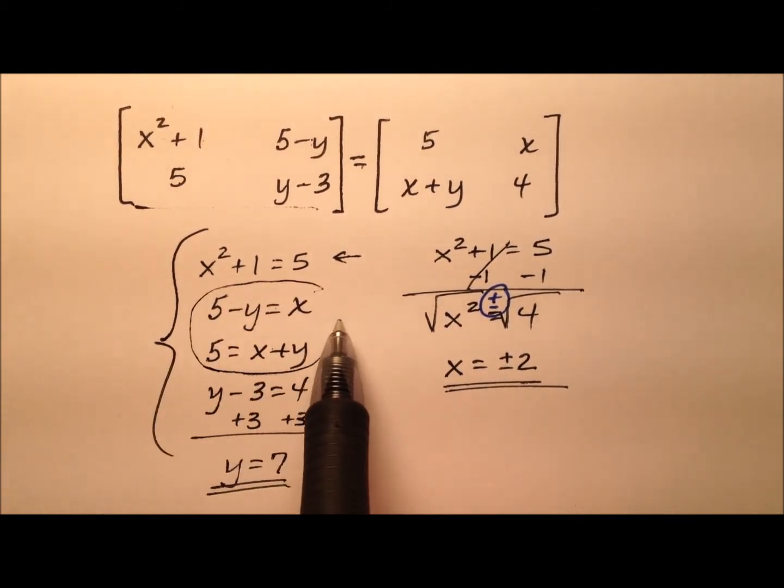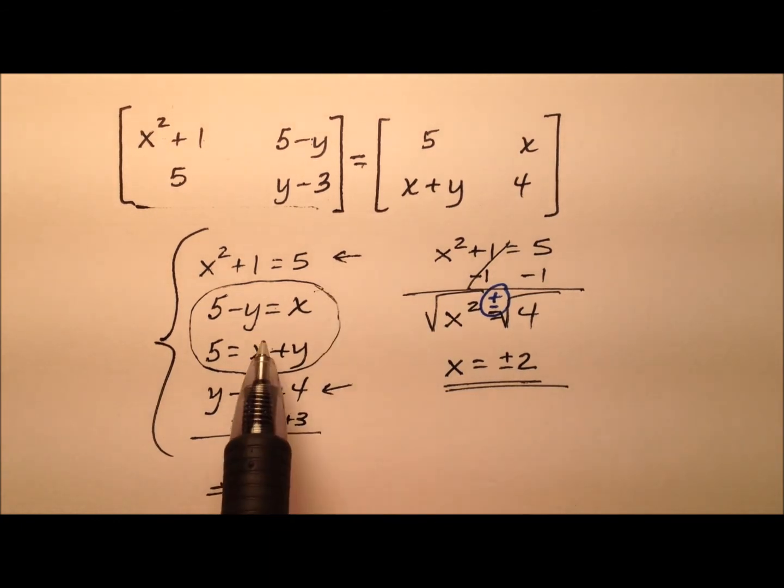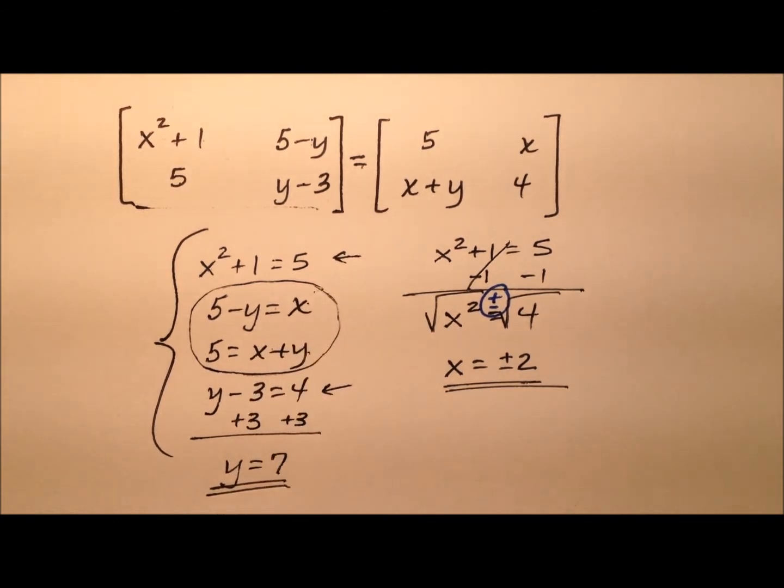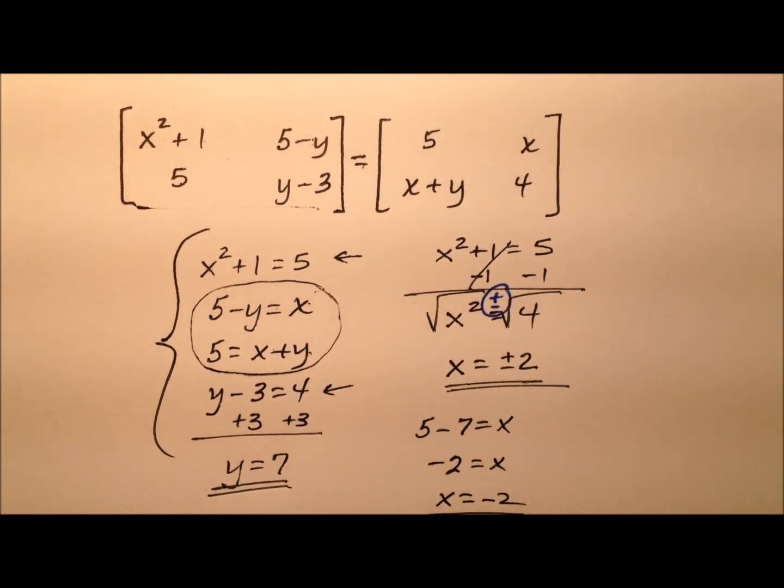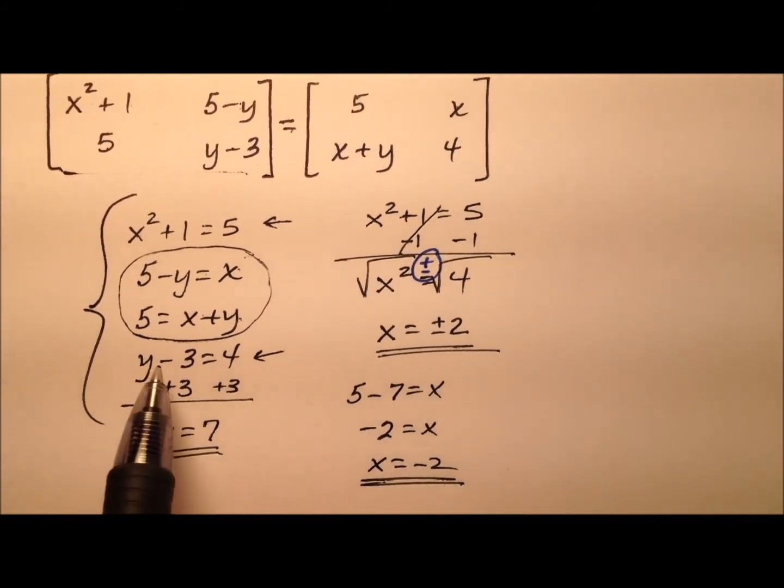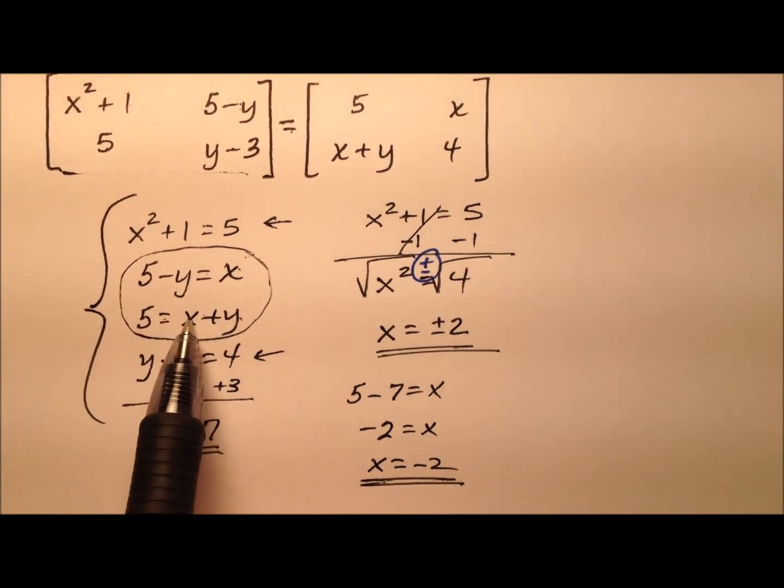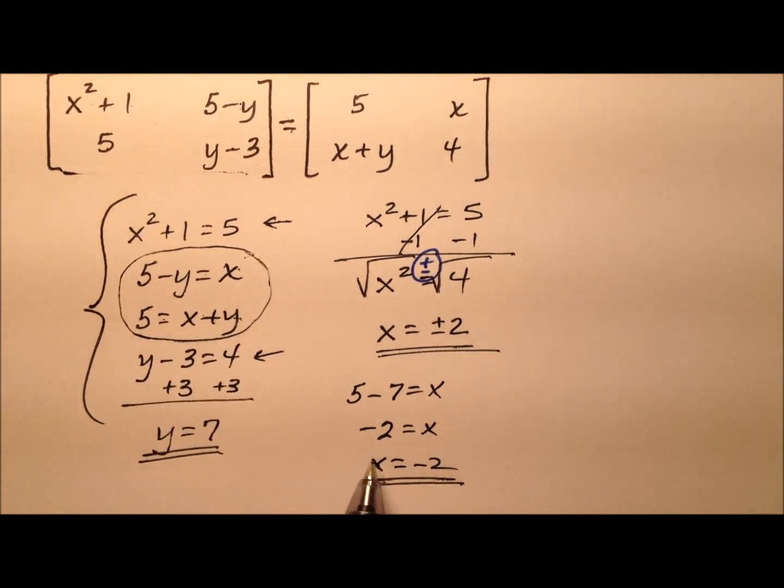Let's go ahead and investigate these middle two equations. It looks like we only need to use one of them. So five minus y, and we know that y is seven, and that equals x. So it looks like x equals negative two. And what we can do is verify that. Five equals x plus y, so negative two plus seven. Yeah, indeed that is five.